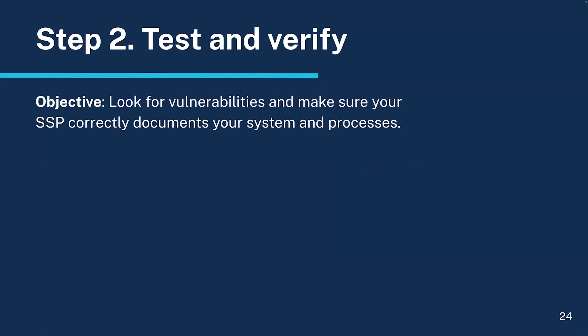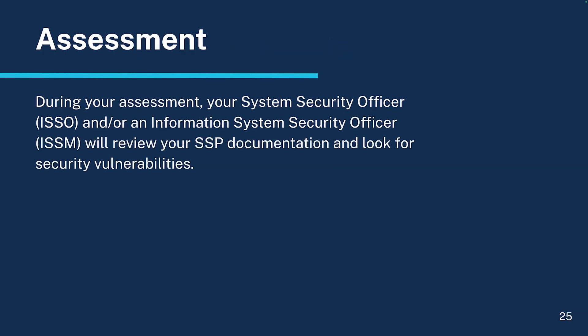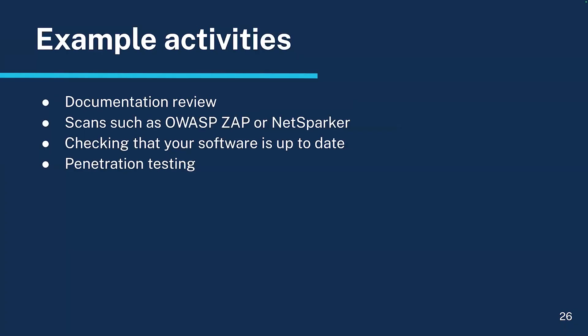Step 2: Test and verify. The objective is to look for vulnerabilities and make sure your SSP correctly documents your system and processes. During your assessment, your system's security officer and/or information security officer will review your SSP documentation and look for security vulnerabilities. Example activities include documentation review, scans such as OWASP ZAP or NetSparker, checking that your software is up to date, and penetration testing. These processes vary widely depending on who's doing your assessment, your agency's policies, and how risky your project is. You may also need penetration testing, where a specialized security tester is authorized to try to exploit the system and find flaws.